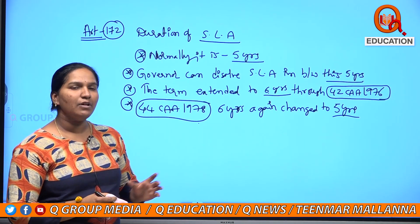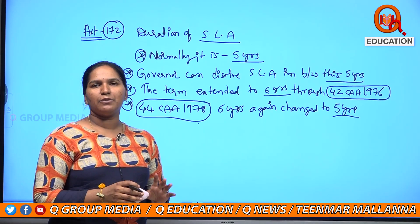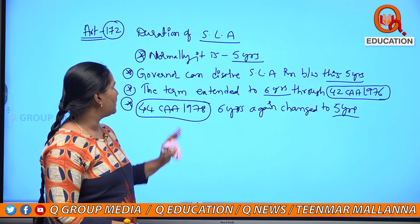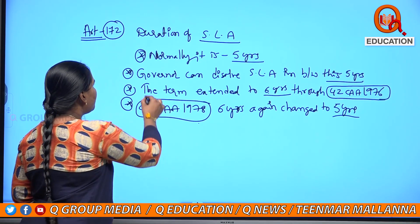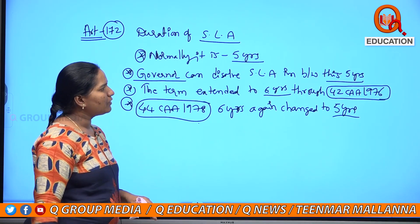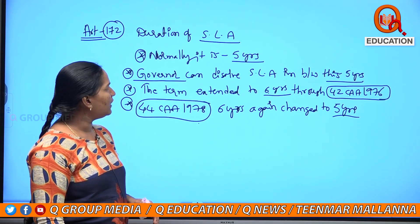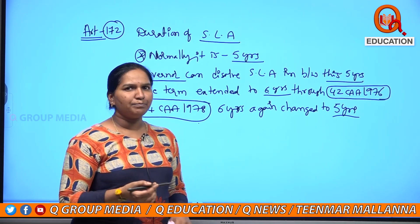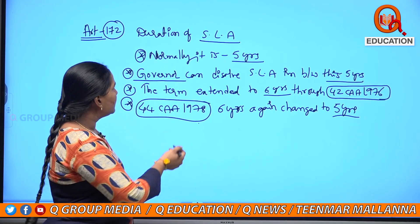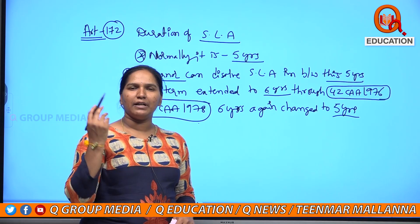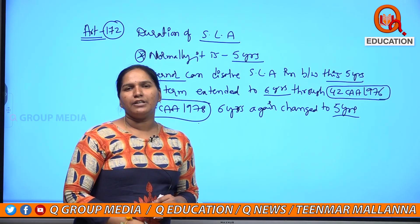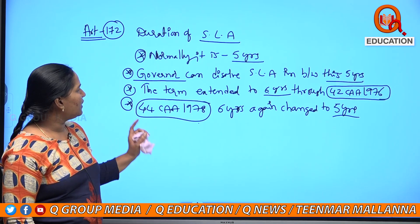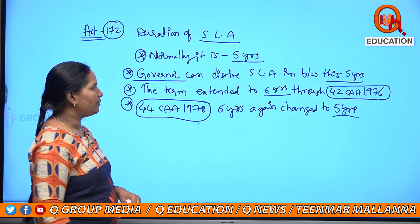So now it is a normal 5-year term. After 5 years, it is important to dissolve the assembly. Who has the power to dissolve the assembly? It is the governor who dissolves the assembly.